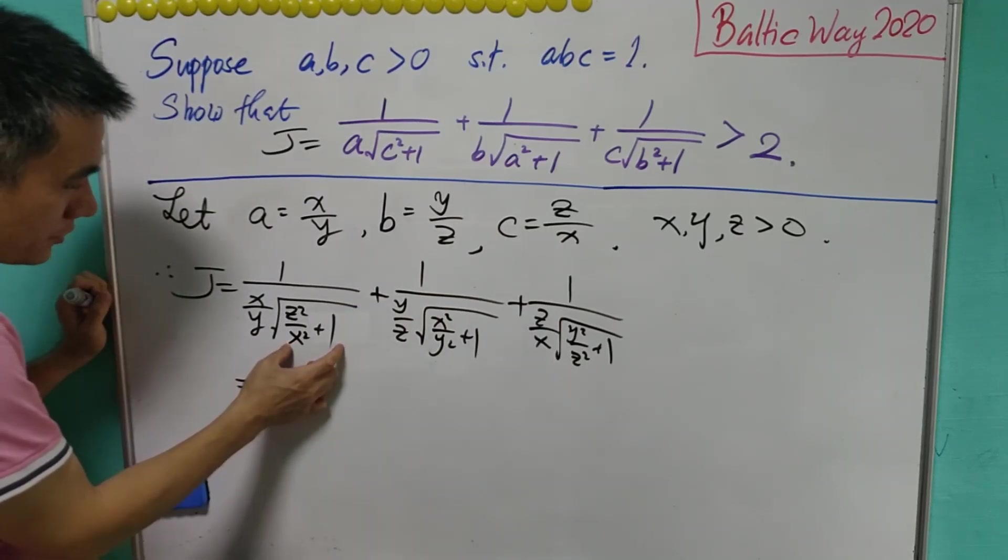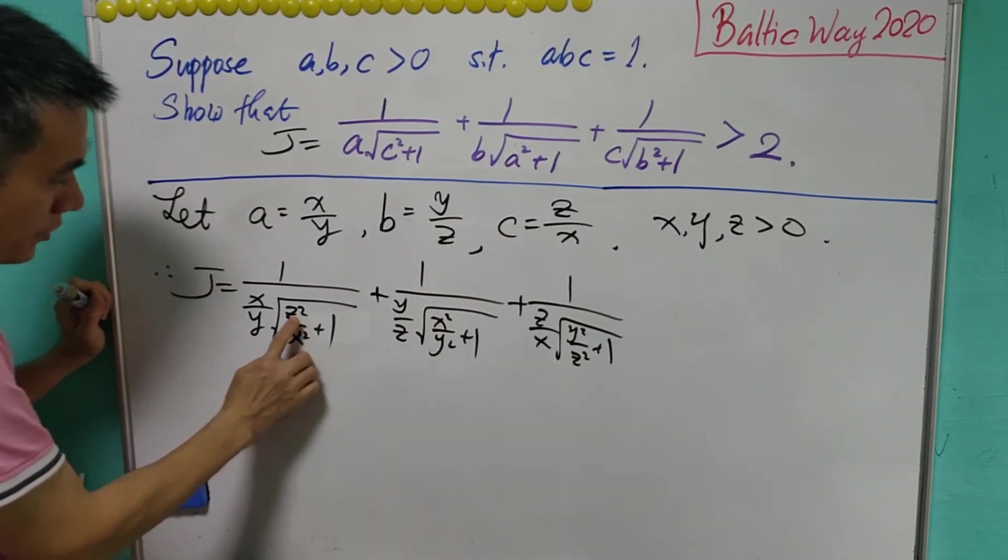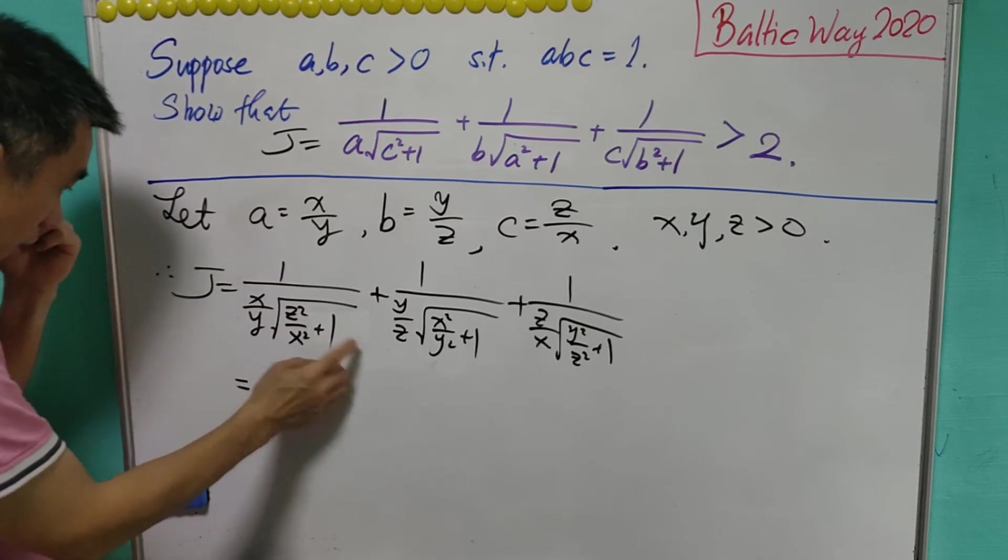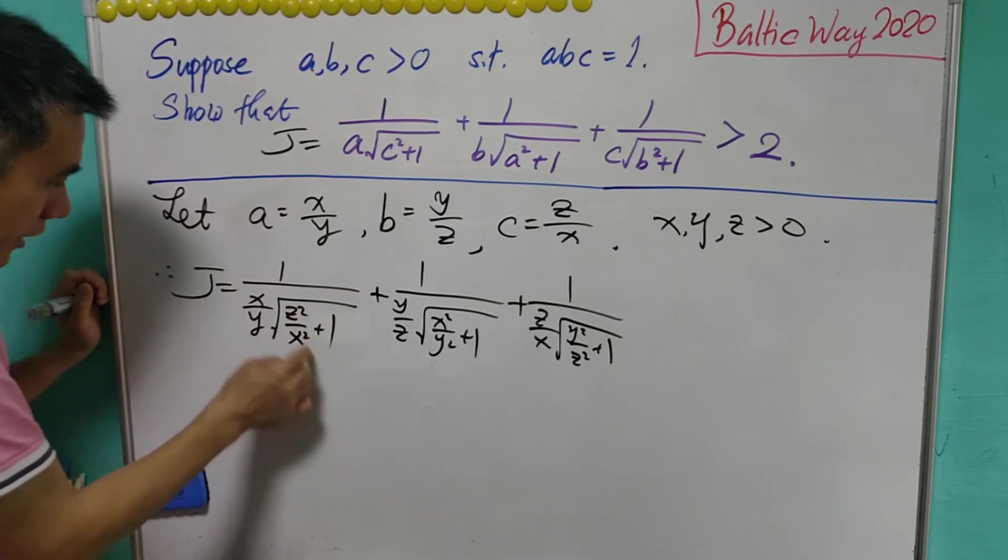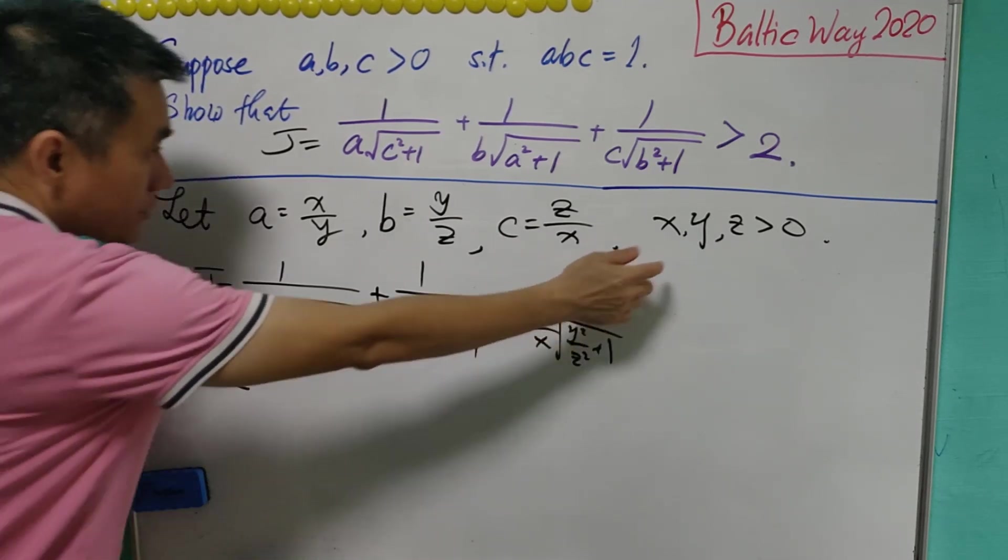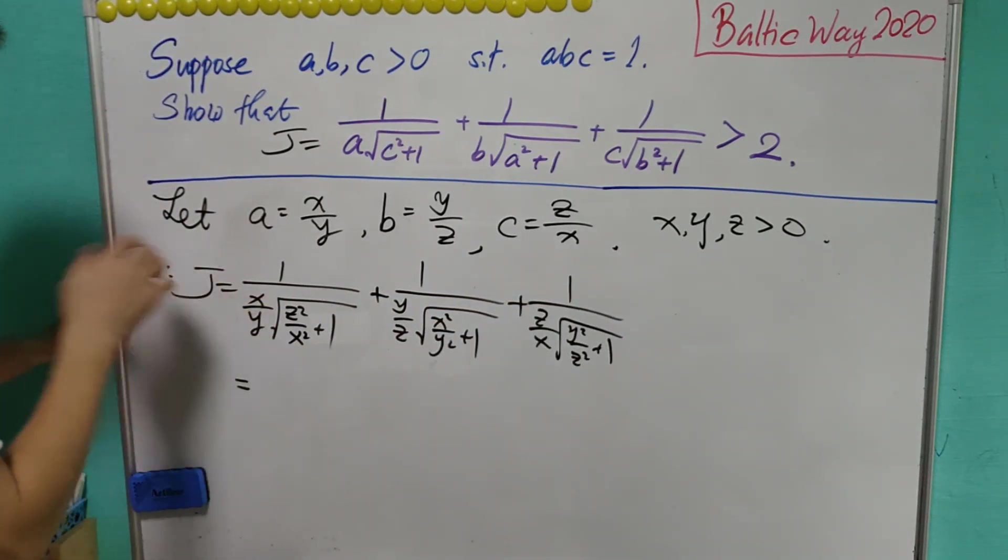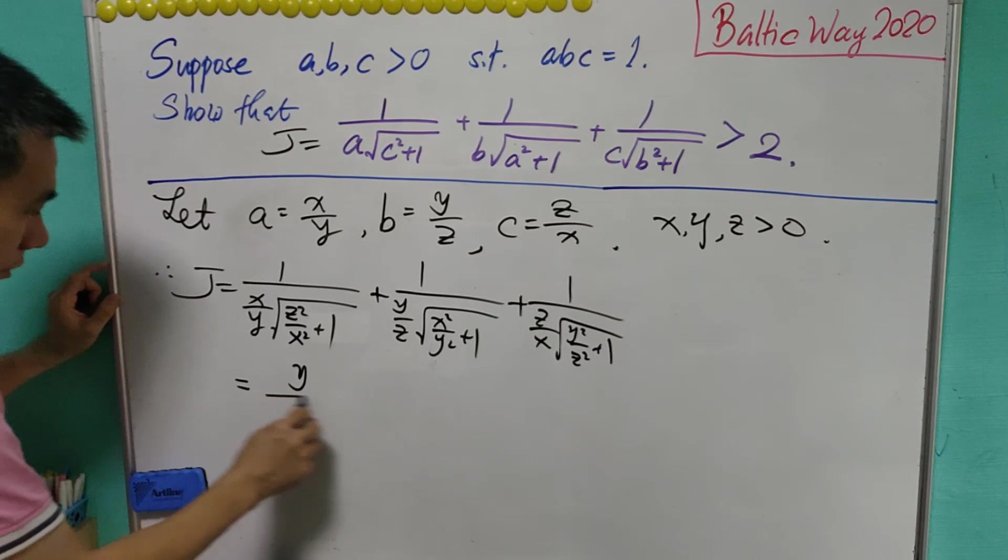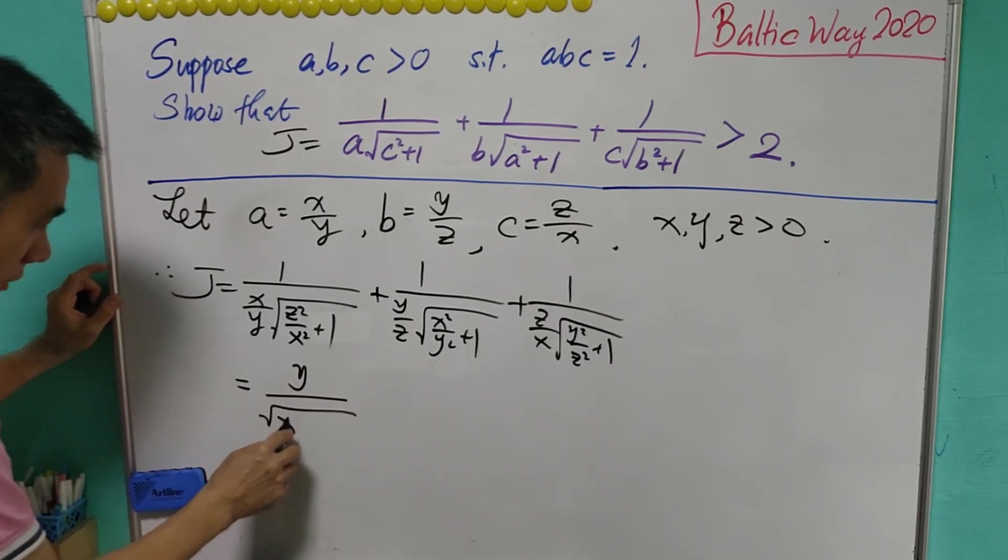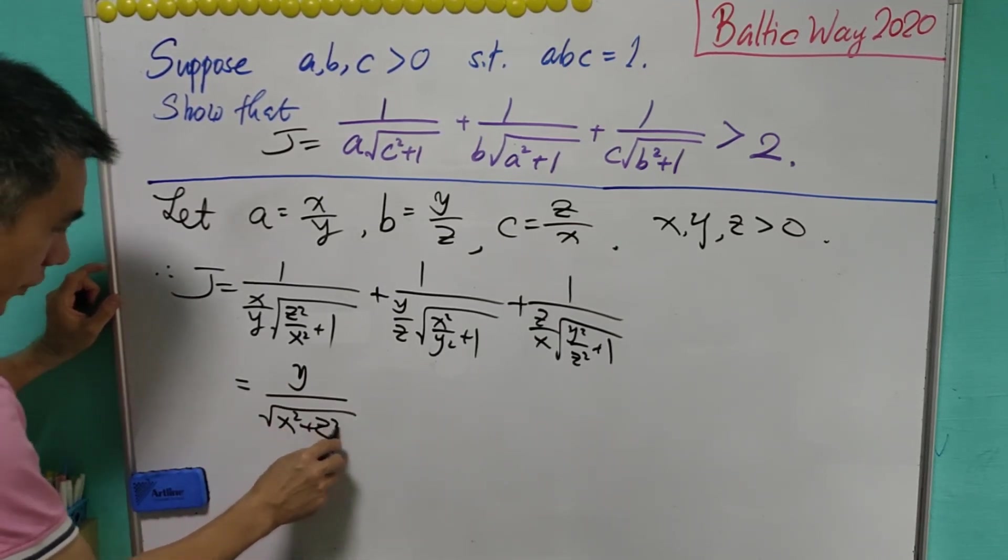We can combine the expression inside the square root, and we have (x squared plus z squared) over x squared. The square root of x squared equals x because x is positive and cancels. And this x over y is actually equal to y over square root of (x squared plus z squared).